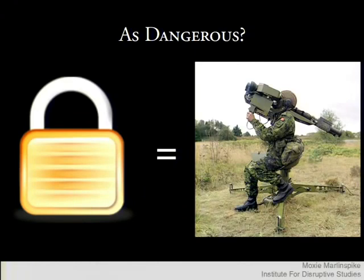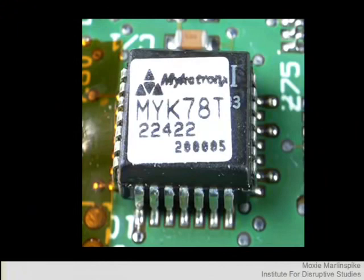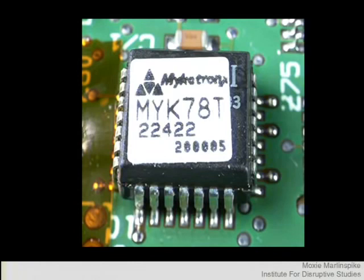At the same time, the government realized these ideas were potentially interesting to some people and that they would want them. So they realized they had to come up with their own solution, and for them that was key escrow, which was best embodied by the Clipper chip. The idea was a totally opaque chip — no one knows the internals — that the government would embed into every piece of consumer communications equipment: every telephone, every fax machine, every personal computer. You could use it to establish secure communications channels with other people. The only trick is that the government would have a master key, which they could use to decrypt whatever communication they were interested in.